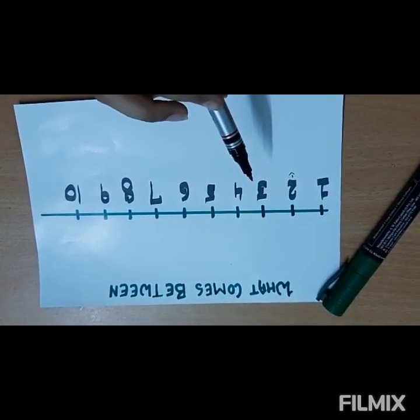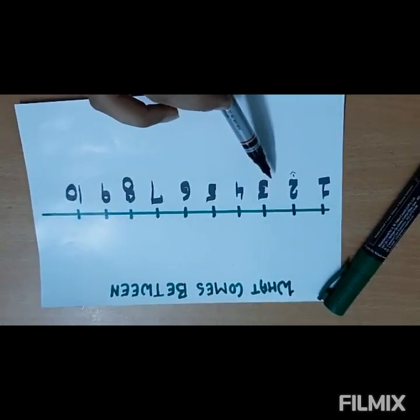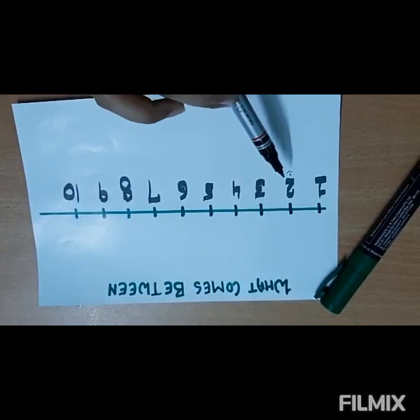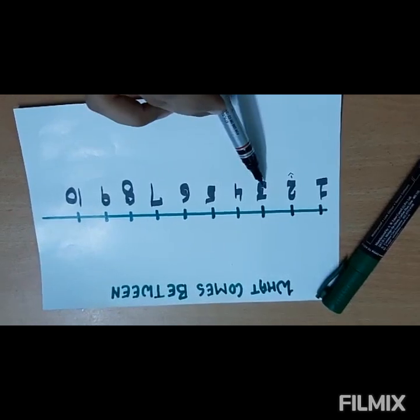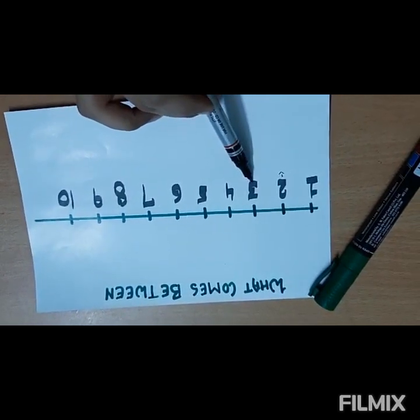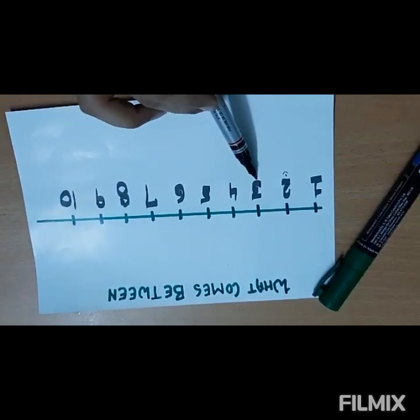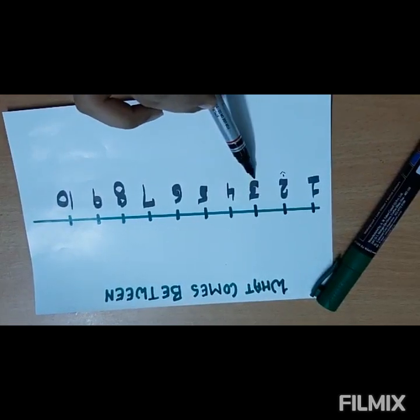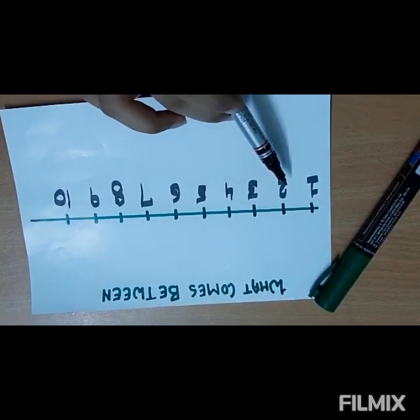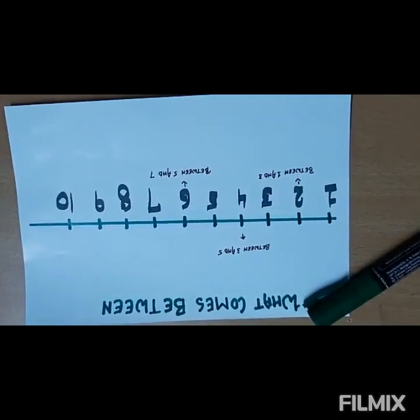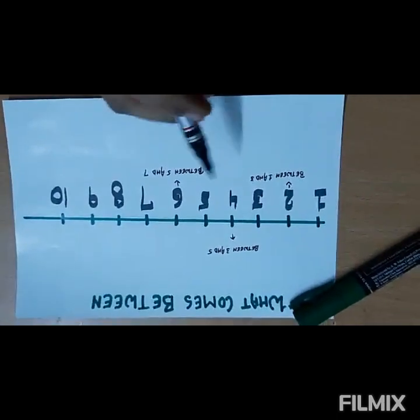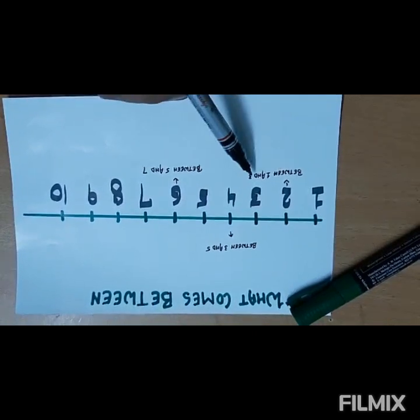If we take two, three, and four, which number is coming in the center? Yes, three is coming in the center. So what will three say? Three will say I come in between two and four. So is it clear? Number two will come between one and three.